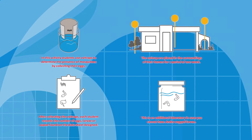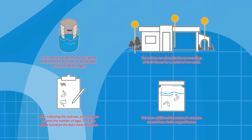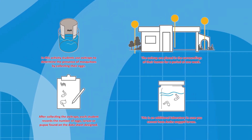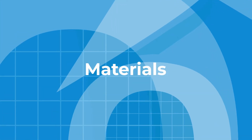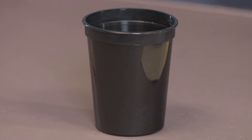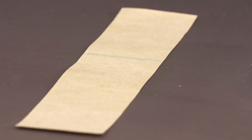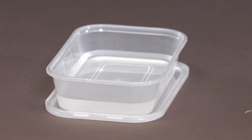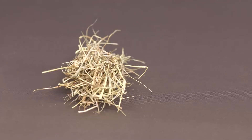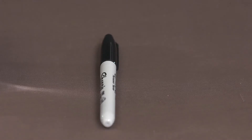This is an additional laboratory in case you cannot have Aedes aegypti larvae. Materials: Ovi trap, germination paper, tap water (six ounces), plastic container with lid to prepare the infusions of hay and water, hay, marker.